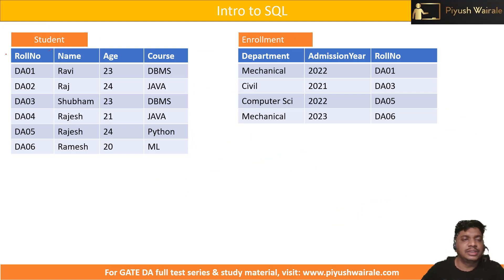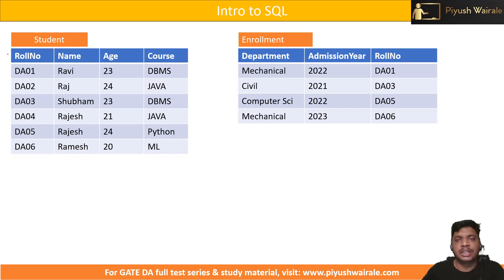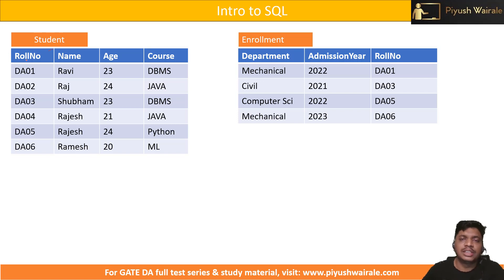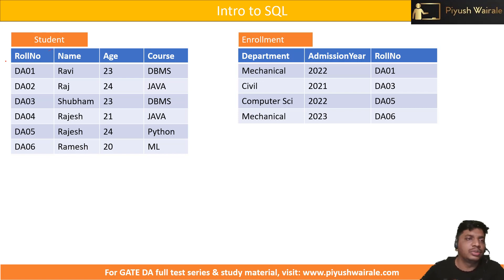What is a database? We have a database which is a collection of tables, in which multiple tables are there and which are linked to each other by a particular foreign key — we can say it is a common attribute. We will discuss about various types of keys in detail. But first, let me discuss these two tables.